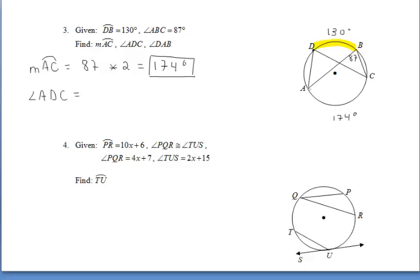Next, we want to find the measure of angle ADC. Well, if we look closely, angle ADC is another inscribed angle that's intercepting that exact same blue arc. So, that means that it's going to be congruent to angle ABC. So, it's also 87 degrees.